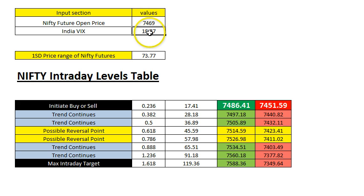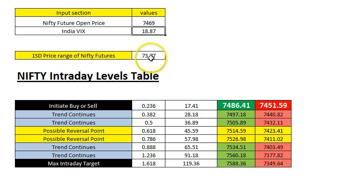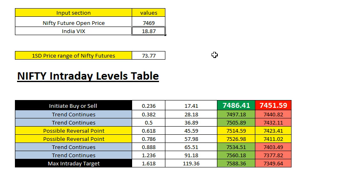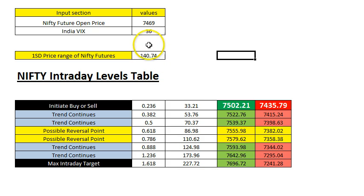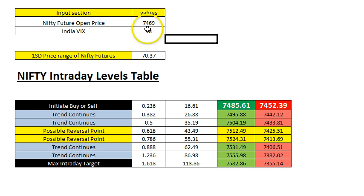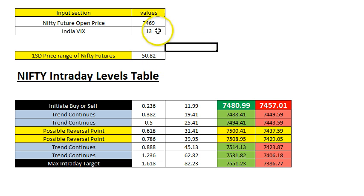Based on the VIX, the sheet calculates the day's range for 1SD price. If I change the VIX to 36, the range is going to be 140. If it is 18, the range is 70; if it is 13, the range is smaller. So the lower the VIX, the less the expected range of Nifty.